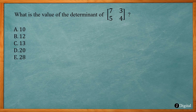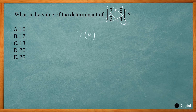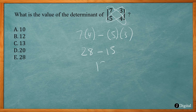This problem asks for the determinant of a matrix. To find the determinant, multiply the main diagonal and subtract the product of the other diagonal. So 7 times 4 minus 5 times 3: 7×4=28, 5×3=15, and 28 minus 15 gives you 13. Answer C. The determinant equals the product of the first diagonal minus the product of the second diagonal.